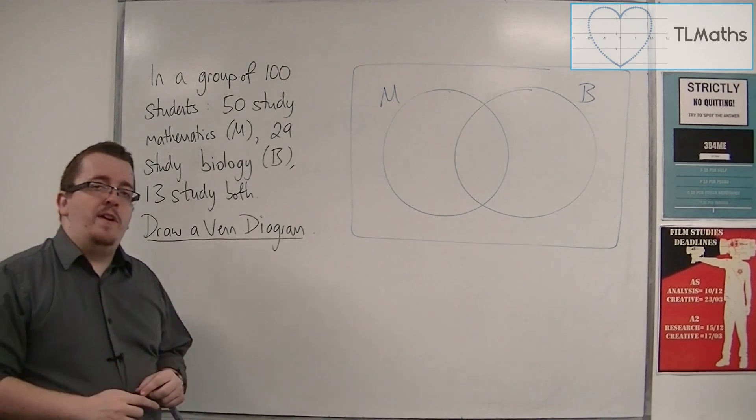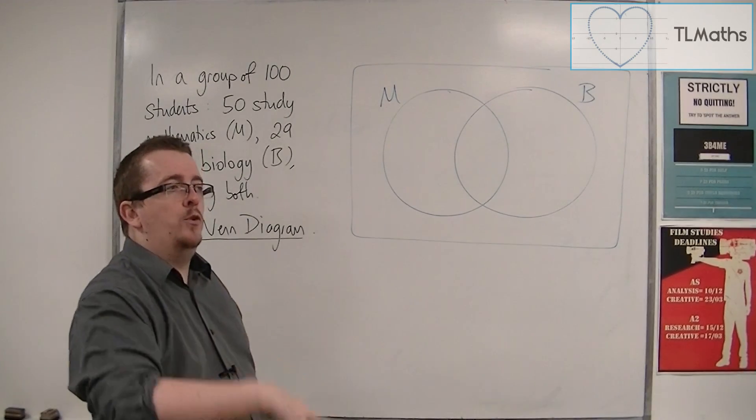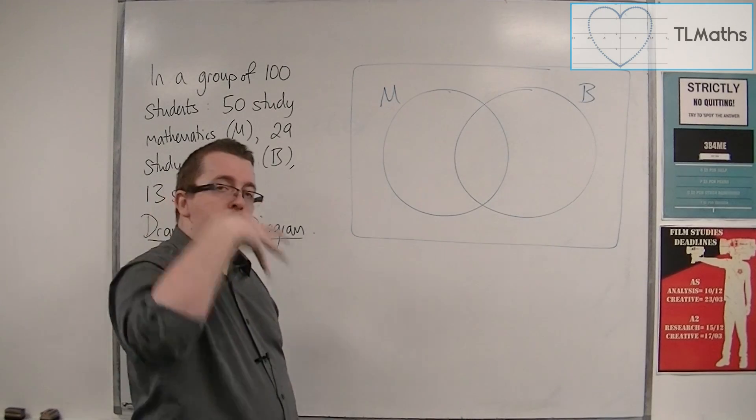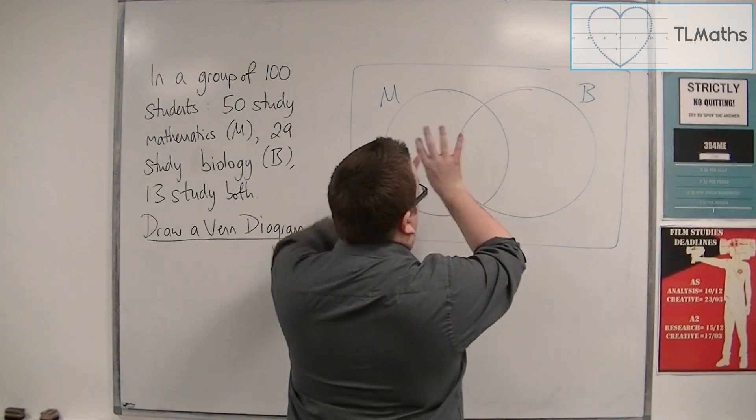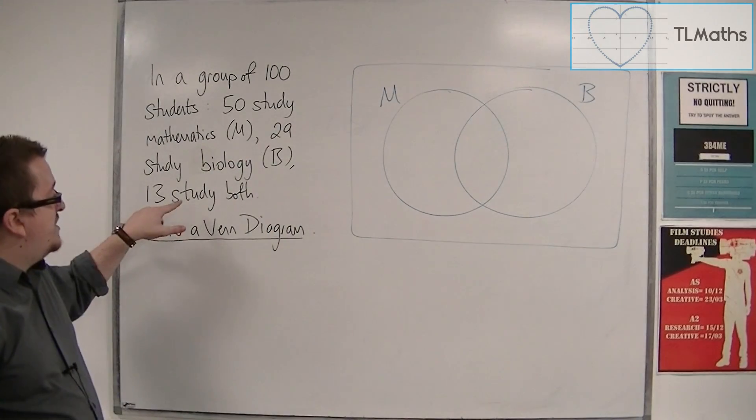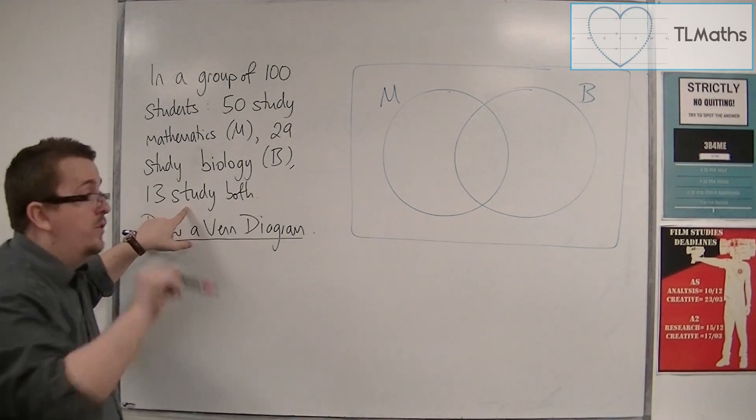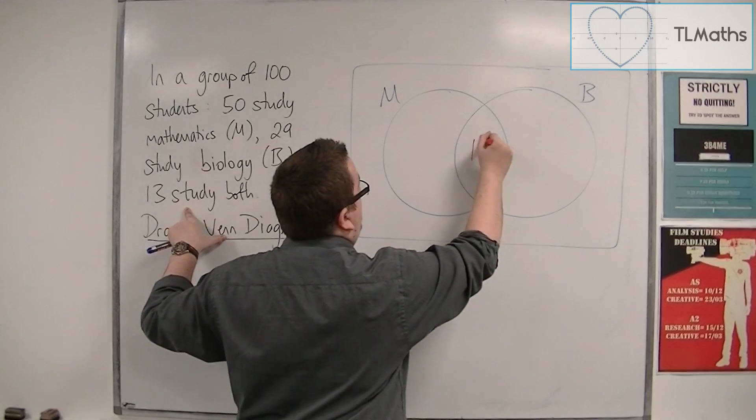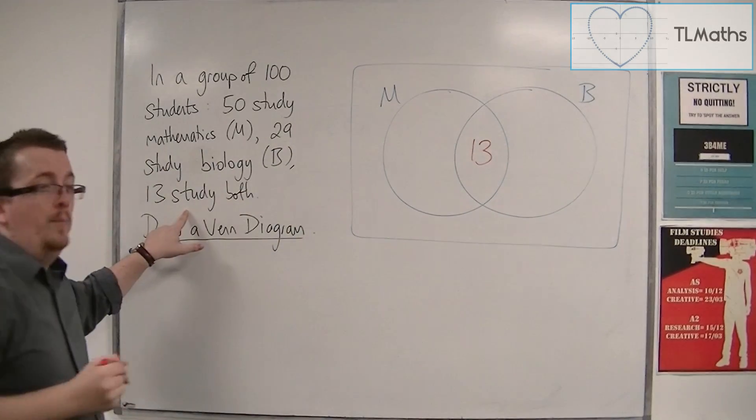Now, when drawing a Venn diagram, it is very useful to start at the middle, at the intersection, and work your way outwards. So what we're going to do is we're going to start at the intersection where we know that 13 study both maths and biology.